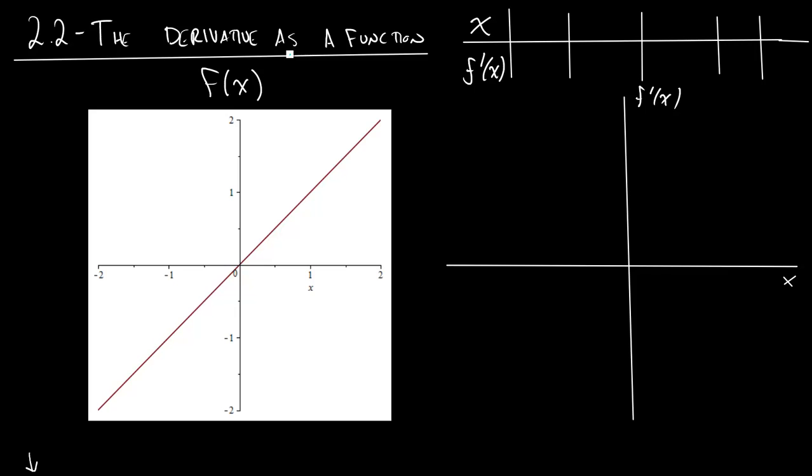All right guys, so today we're going to start looking at the derivative as a function. And so far what we've done is kind of look at the derivative at individual points. Like we might say, let's look at this function here and let's think about x equals negative 1. So I'm going to put negative 1 up here and I want to know what the derivative at x equals negative 1 is.